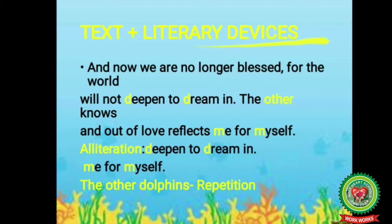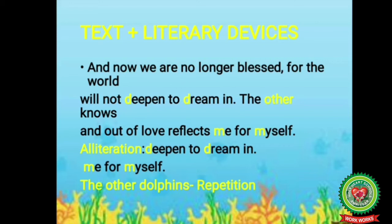Stanza three text: 'And now we are no longer blessed, for the world will not deepen to dream in.' The dolphins are no more blessed as the new artificial world is quite shallow — they cannot dream as they used to in their natural habitat, the ocean. 'The other knows and out of love reflects me for myself' — the other dolphin shares its feelings and their mutual understanding is shown. Literary devices: 'deepen into dreaming' uses alliteration with the D sound, and 'me for myself' uses alliteration with the M sound.